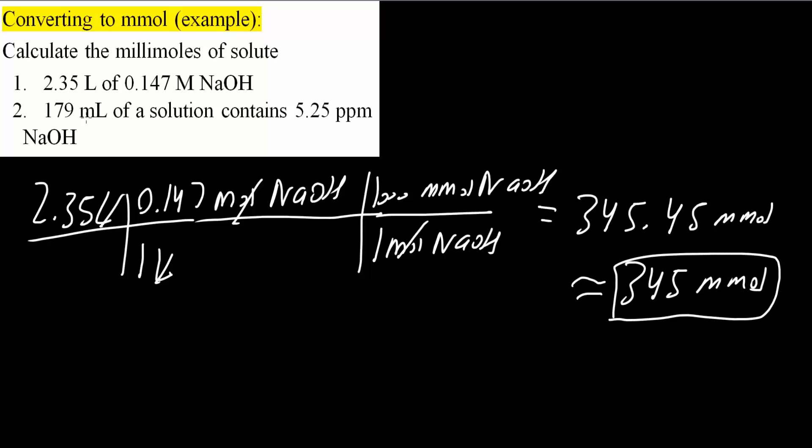Now we'll do the second one. 179 milliliters of a solution contains 5.25 parts per million of NaOH. So first we need to think, what is parts per million? So 5.25 parts per million of NaOH is equal to 5.25 milligrams of NaOH per liter. This is a little trick. Parts per million, we could say milligrams per liter.